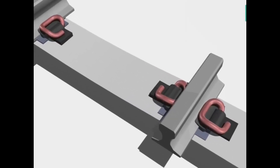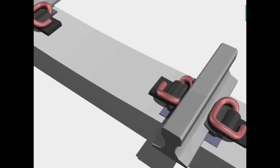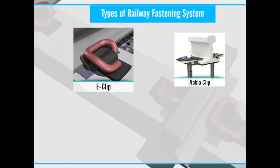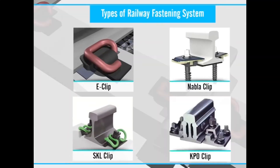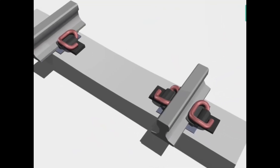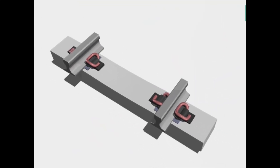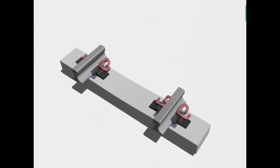In this video, we will learn about the rail fastening system. The railway fastening systems can be divided into various types. Each type of rail fastening system has its own components, which are different from other types. Rail fastening systems are typically named after the types of rail clip.